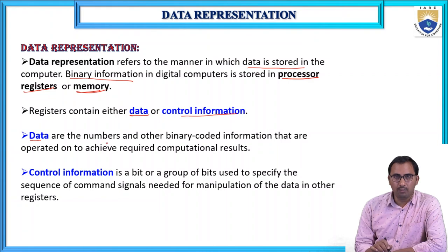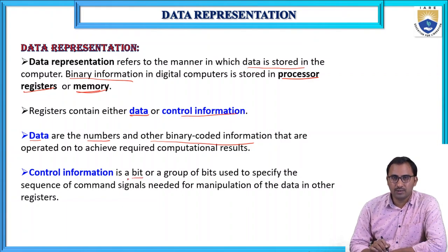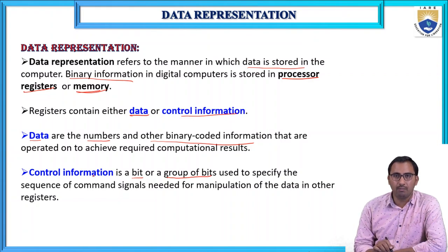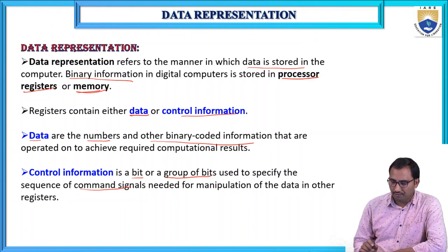Registers contain two types of information: data and control information. Data includes numbers and other binary coded information that are operated on to achieve required computational results. Control information is a bit or a group of bits used to control some operation — it specifies the sequence of command signals needed for manipulation of the data in other registers.